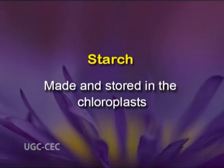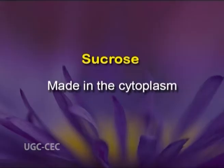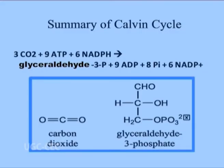Carbon fixed by the Calvin cycle is processed for long-term storage in two distinct forms. One of these forms is starch, which is made and stored in the chloroplast. The other form is sucrose, which is made in the cytoplasm. In both cases, triose phosphate is the beginning point for the conversion.